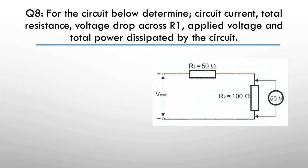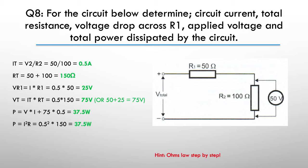Question eight for the circuit below. Determine the circuit current, the total resistance, the voltage drop across R1, applied voltage and the total power dissipated by the circuit. So pause here. So again, the hint is, get out your Ohm's law wheel. This is just an Ohm's law problem.